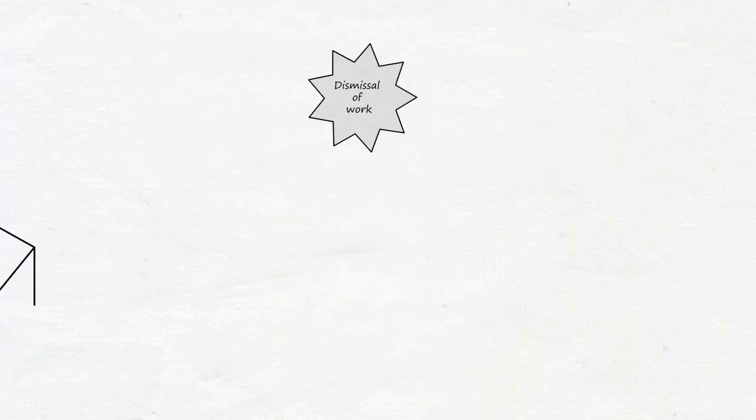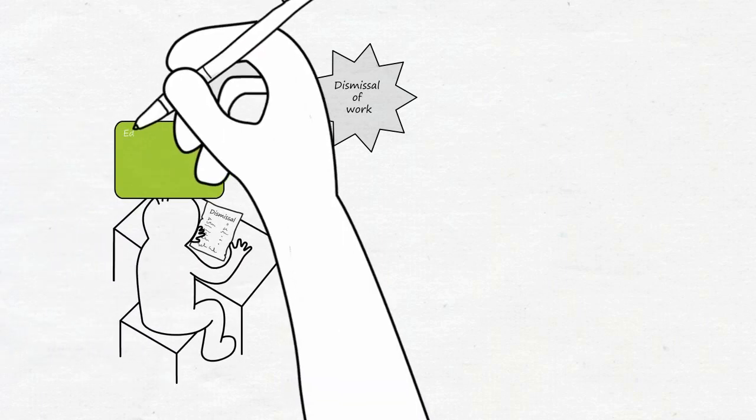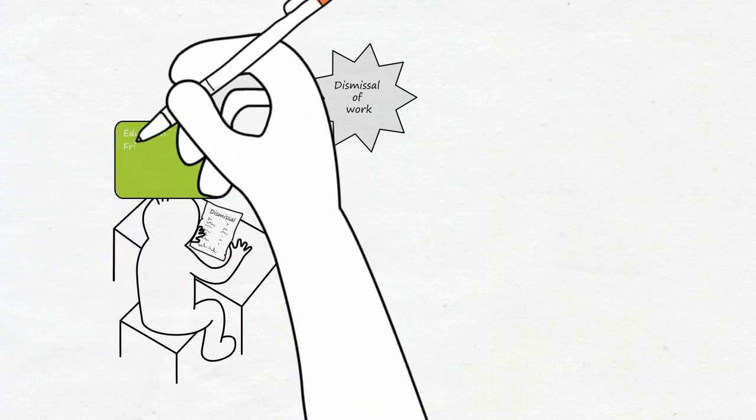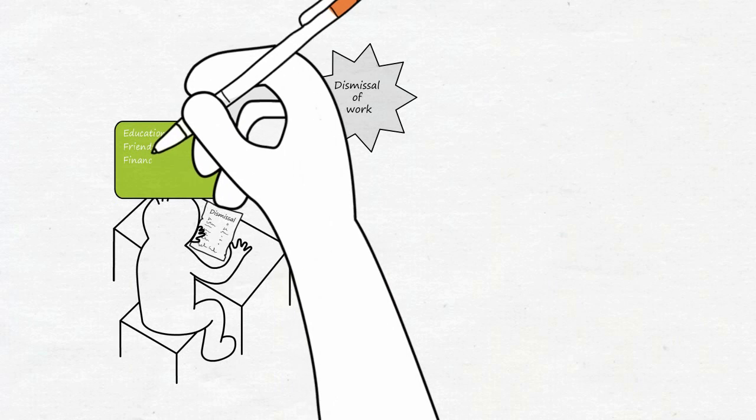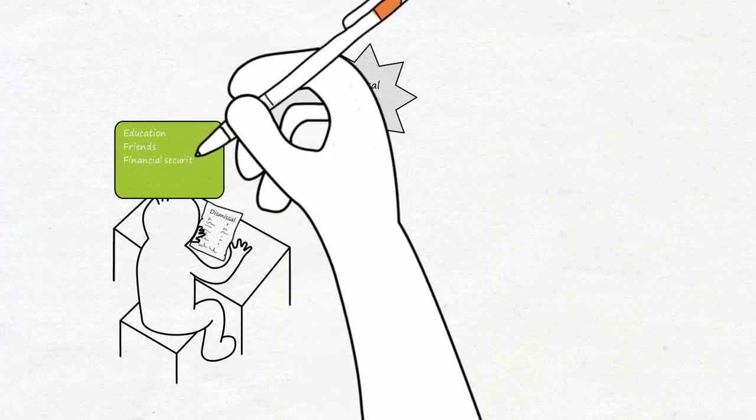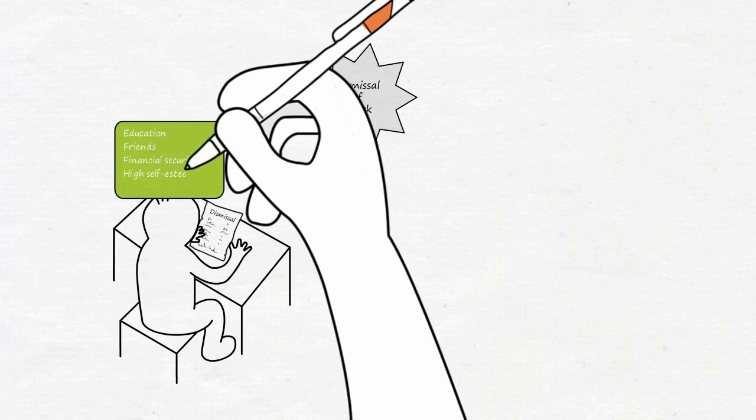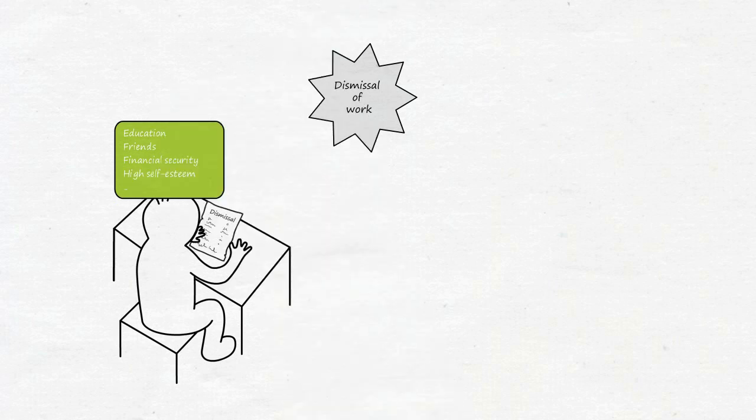Take for example, suddenly losing one's job. If the person has a good education, close friends with whom they can stay for a while if necessary, financial security from their family, as well as high self-esteem, the situation is certainly uncomfortable for them but will probably not result in a biological conflict.